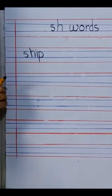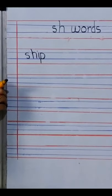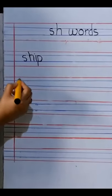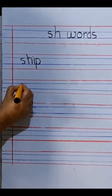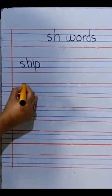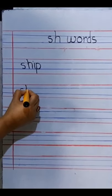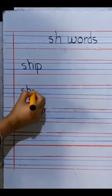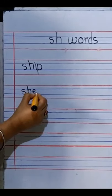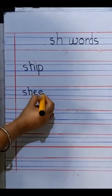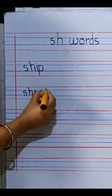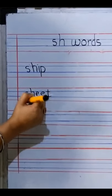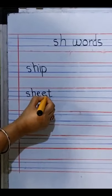Now we move to the next word. The next word we are going to write is sheet. SH. S. H. E. E. And a T. Sheet.